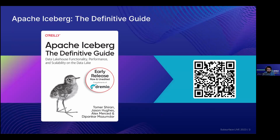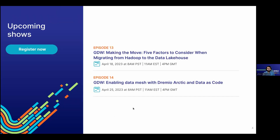Also, go pick up an early and free copy of the Apache Iceberg Definitive Guide. Many of us here at Dremio are writing it for O'Reilly, slated for early next year. You can get yourself an early copy of the first chapter by scanning the QR code.